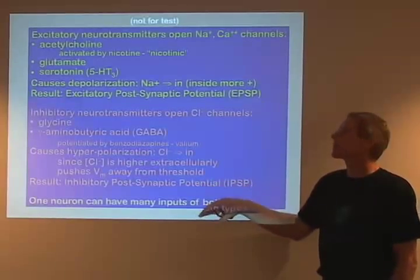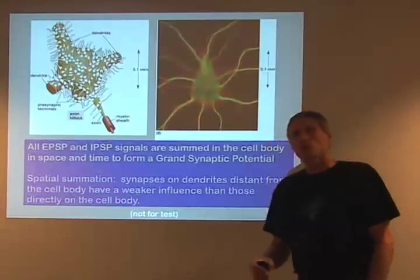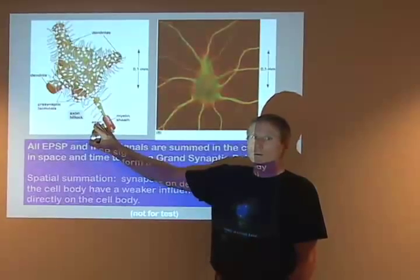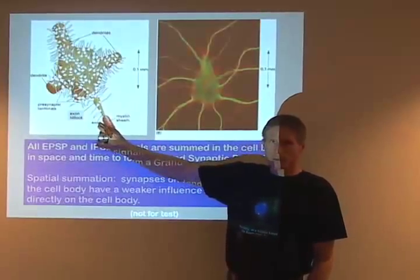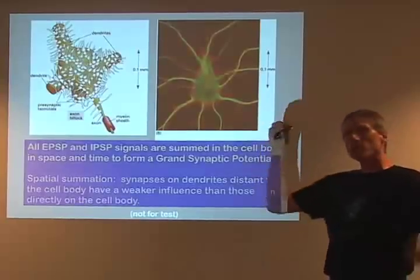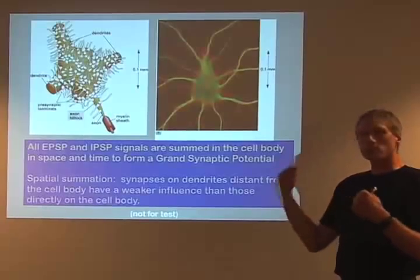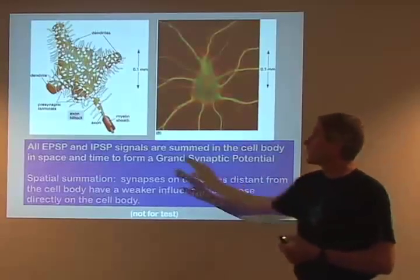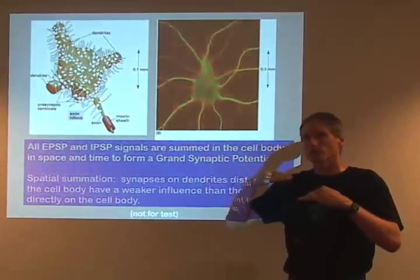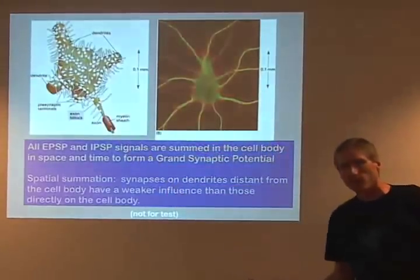Excitatory signals drive the membrane potential more positive. If enough of these are present, you can reach threshold and open sodium channels at the axon hillock, right next to the cell body, causing firing of an action potential to the next cell. In real cells, there's a whole bunch of synapses all over the cell body. All the excitatory and inhibitory signals are summed in both space and time at the axon hillock. If the sum of all these signals leads to a change in membrane potential beyond the threshold to open sodium channels, then all the sodium channels open, you get an action potential firing, and that's how it works.